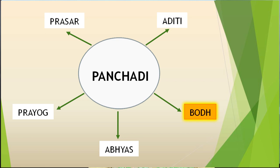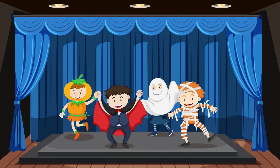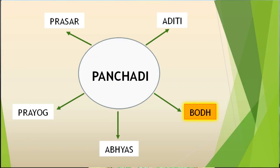Next is Bodh or conceptual understanding. Encourage students to understand core concepts through play, enquiry, discussion and experiments. For example, an effective and interesting way to do a literature lesson like Anne Frank or Mother's Day is to do a role play. If the story is not in the form of a play, students could write their own dialogues for the characters involved. This will allow better understanding of the characters.